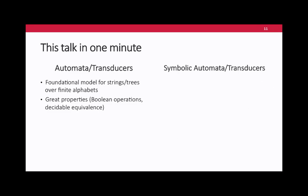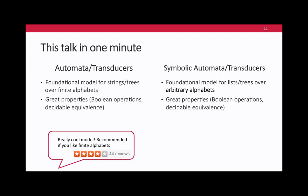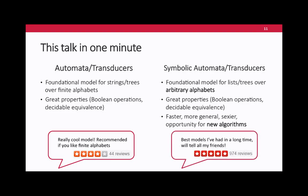If you are planning to fall asleep for the next 80 minutes, this is the only slide to remember. Automaton transducers are great models — very useful, lots of applications, lots of great properties. If somebody wrote a Yelp review, they'd say: really cool model, recommended if you like finite alphabets. Symbolic automaton transducers are also a foundational model, work for arbitrary alphabets including structured ones, and have great properties like classic automata. Besides working for large alphabets, they offer opportunities for completely reinventing automata theory in a way that is aware of the alphabet structure.